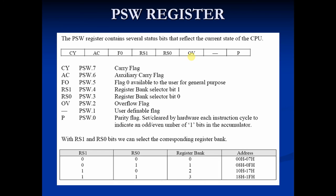Now we will talk about the three control flags. The first one is F0. It is a user-defined flag — the user defines the function of this flag. The user can set, test, and clear this flag through software.